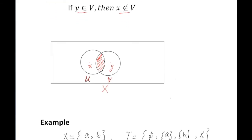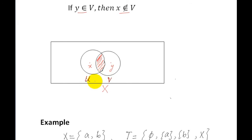Here is the figure. We have a ground set X, and for any two distinct points X and Y there exist two open sets U and V such that X belongs to open set U and Y belongs to open set V. Remember that open sets U and V need not be disjoint — U and V can be disjoint or not disjoint. Here we see that U and V are not disjoint, and this portion is the intersection of both sets U and V.